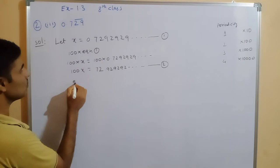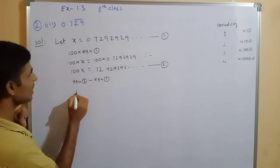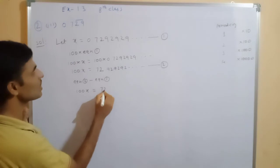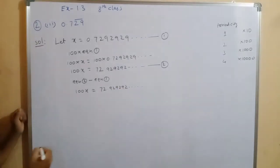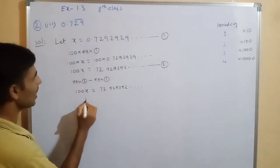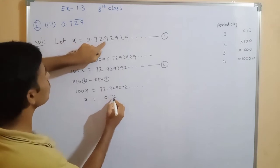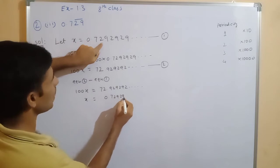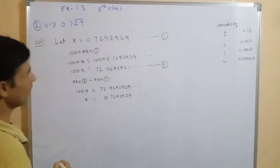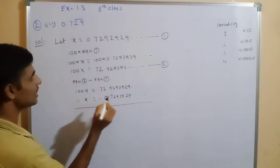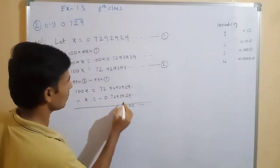Now we have to do Equation number 2 minus Equation number 1. Subtracting: the repeating decimal parts cancel out, leaving us the result on the left side as 100x minus x.